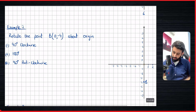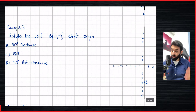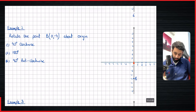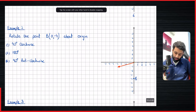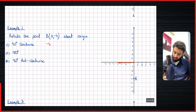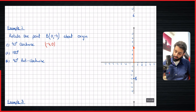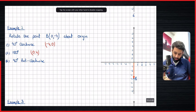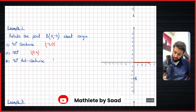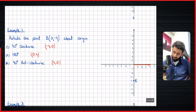Let's do another example. We have a point at (0, −4) and we'll rotate it about the origin — 90 degrees clockwise, 180 degrees, and 90 degrees anticlockwise. Rotating 90 degrees clockwise: the hand moves from six to nine, giving (−4, 0). Rotating 180 degrees: the hand moves from six to twelve, giving (0, 4). Rotating 90 degrees anticlockwise: the hand moves from six to three, giving (4, 0). That's example two solved.